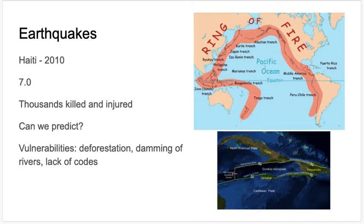One of the biggest vulnerabilities that humans have to earthquakes is when buildings are not built to a code designed to withstand earthquakes. In the United States, we have a pretty strong code, particularly in places like California that are at risk of earthquakes, and buildings are built to withstand earthquakes of a certain magnitude. That's because of major earthquakes that destroyed areas like San Francisco back in the early 1900s — we learned from that and changed how we did things.